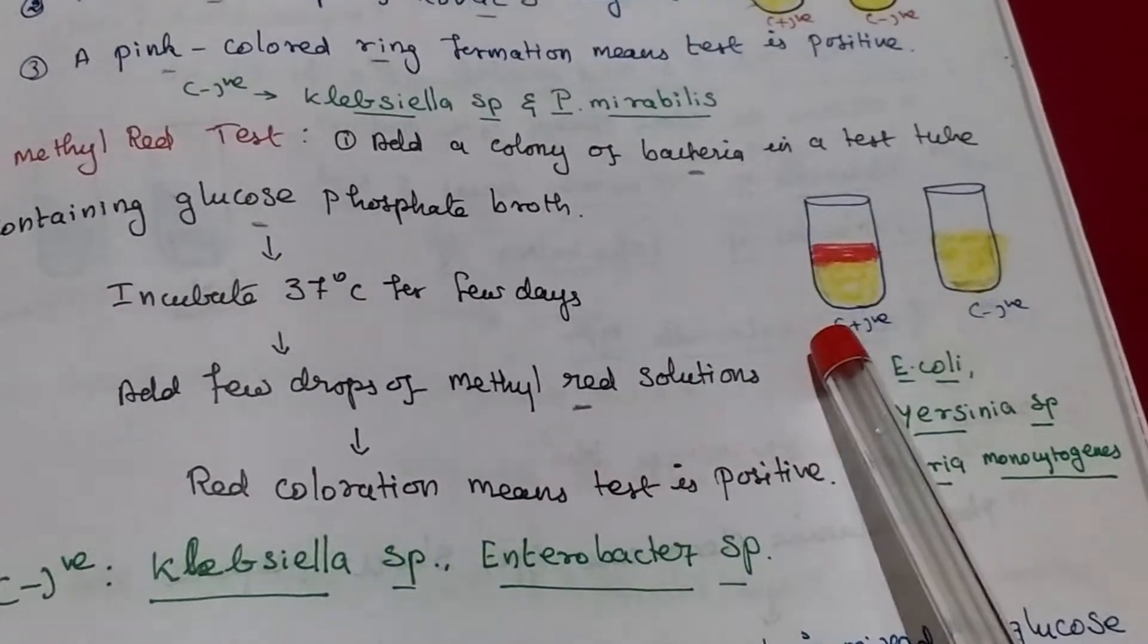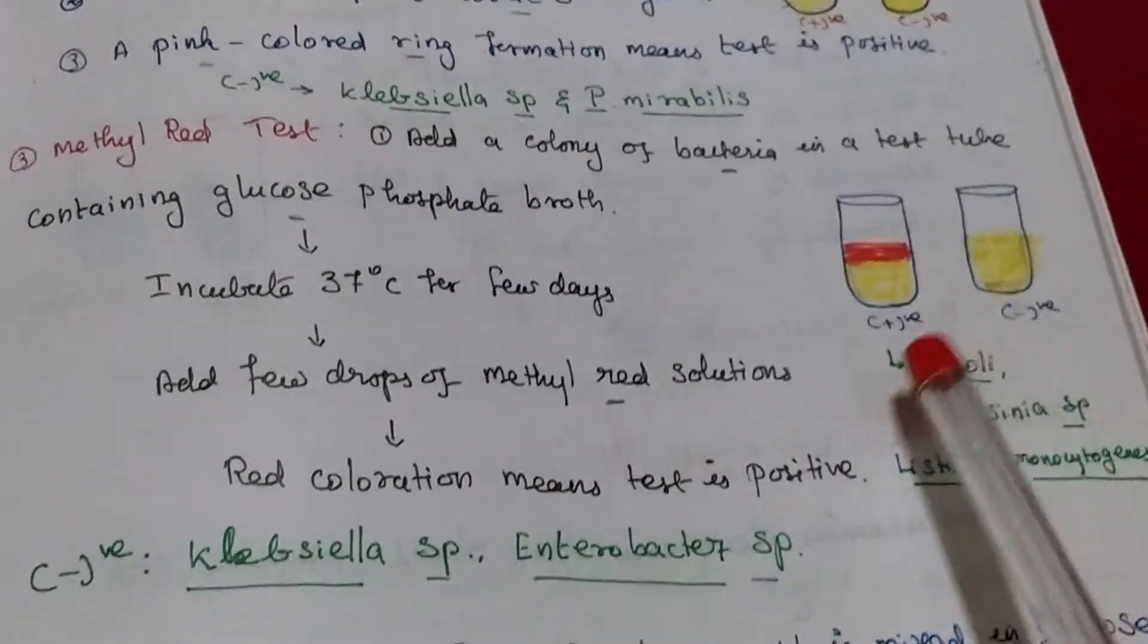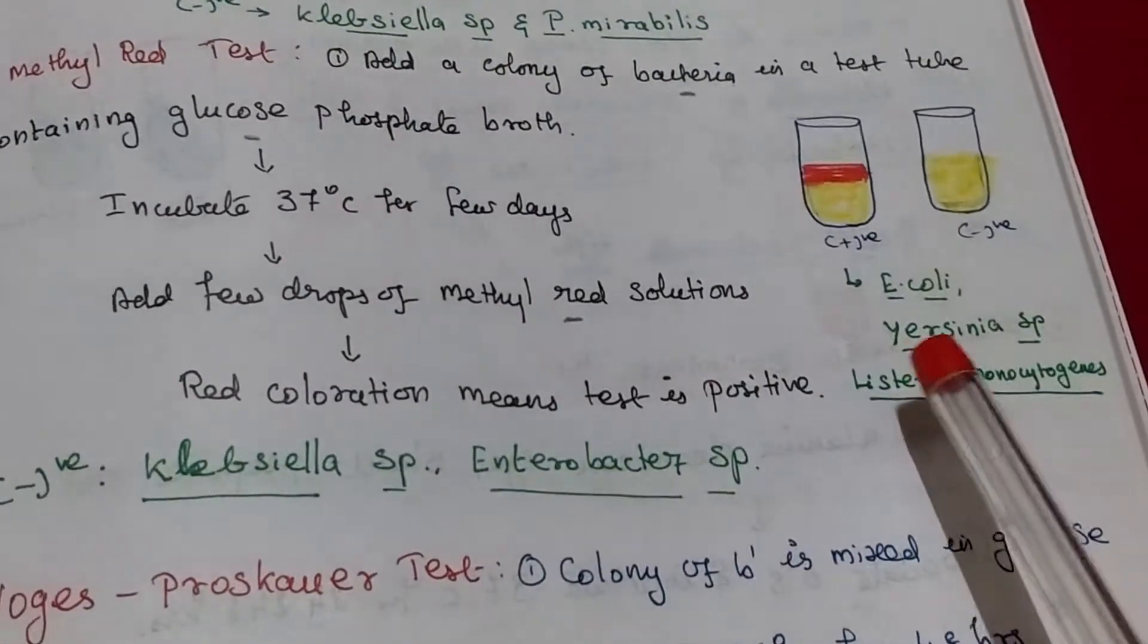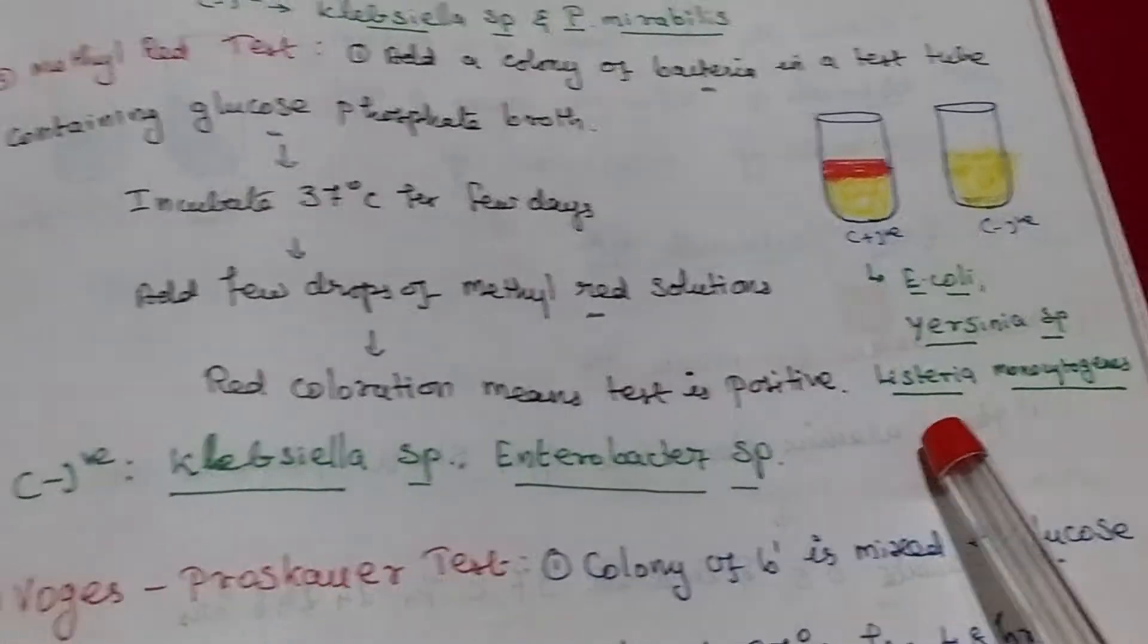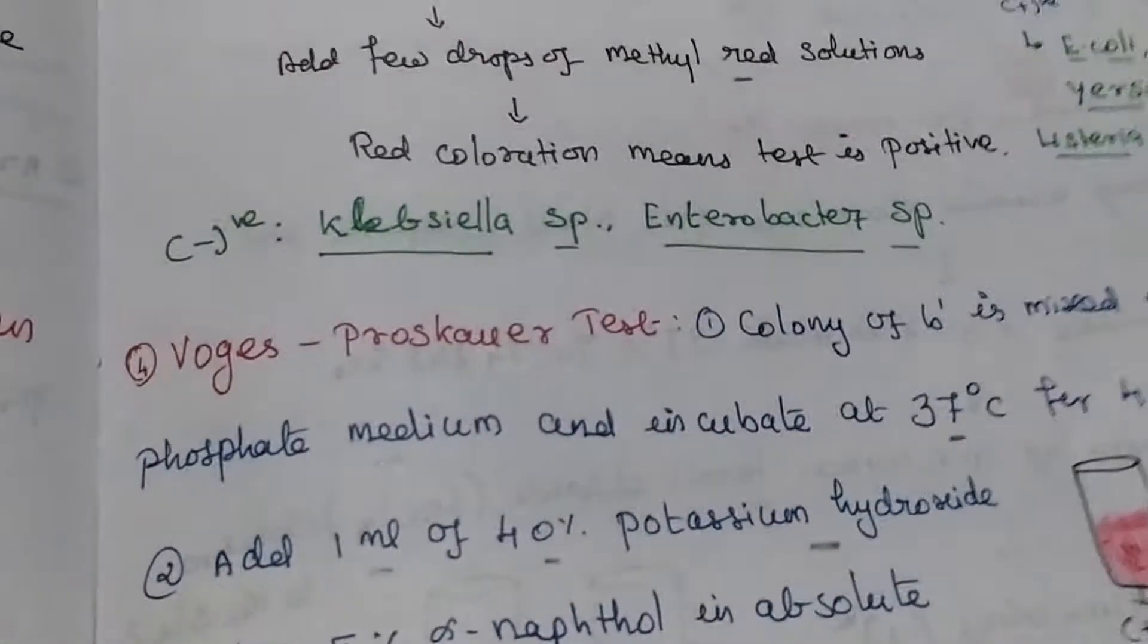Add a few drops of methyl red solution. Red color ring formation indicates positive otherwise negative. Positive organism E. coli, Yersinia, listeria. Negative organism Klebsiella and enterobacter.